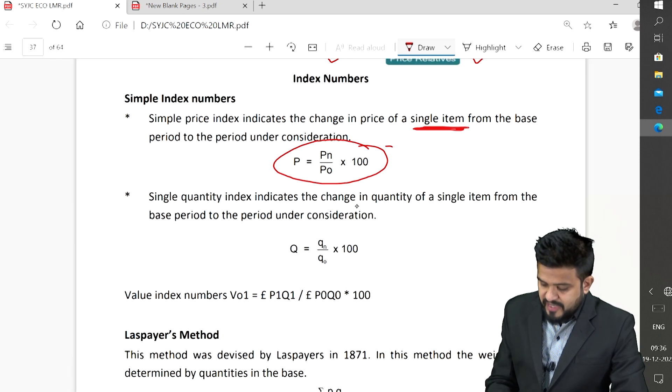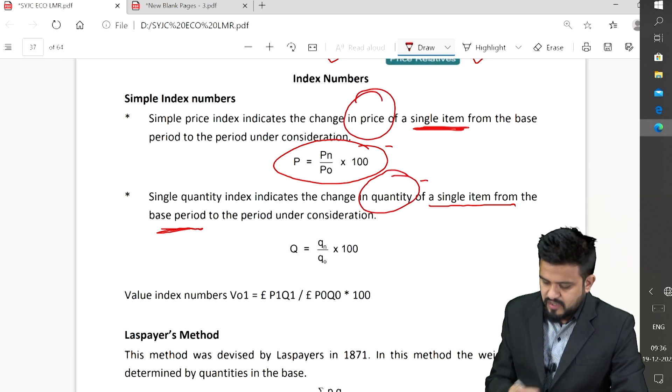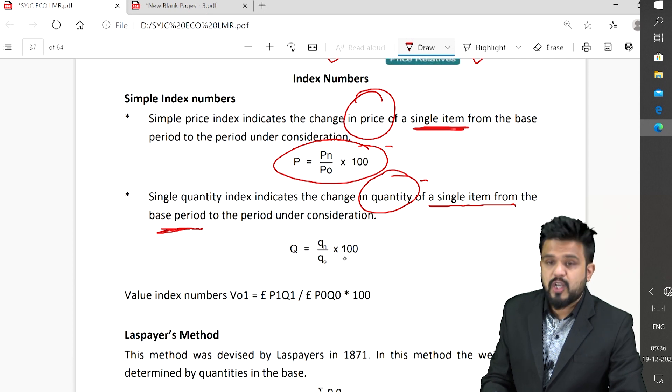Single quantity index indicates the change in quantity of a single item from base year. Your price is changing, your quantity is changing: Q_n upon Q_0 into 100.